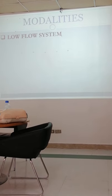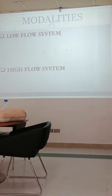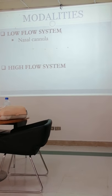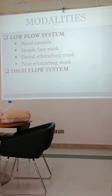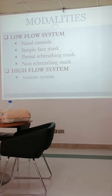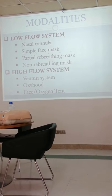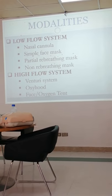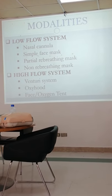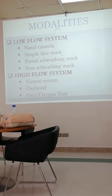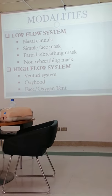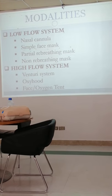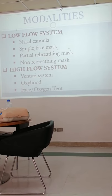What are the modalities for giving oxygen support? We have two: low-flow system and high-flow system. Low-flow includes nasal cannula, simple face mask, partial rebreathing mask, and non-rebreathing mask. High-flow includes Venturi, Oxymask, and face tent. Low-flow does not mean just one or two liters — it refers to how much fraction of inspired oxygen (FiO2) is going inside the body.